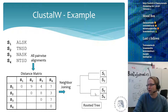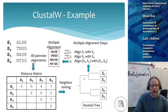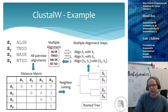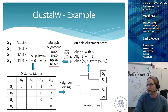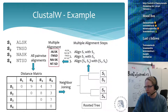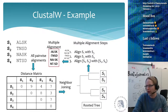Then you do your alignment step: first aligning S1 with S3, then S2 with S4, and then aligning the two branches of the tree together. Because of this you end up with your multiple sequence alignment. It's just an example to show that you calculate the distances, make a tree, and then with the tree you start doing the alignment pairwise.